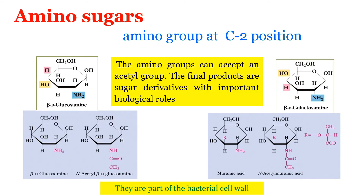The next category is amino sugar. Here, an amino group is attached at the second carbon. In glucose, if an amino group is attached at the second carbon, we get glucosamine. If an amino group is attached to galactose, we get galactosamine. These amino groups have the capacity to accept an acetyl group — they react with acetic acid, giving acetyl derivatives. From glucosamine, we get N-acetyl glucosamine.